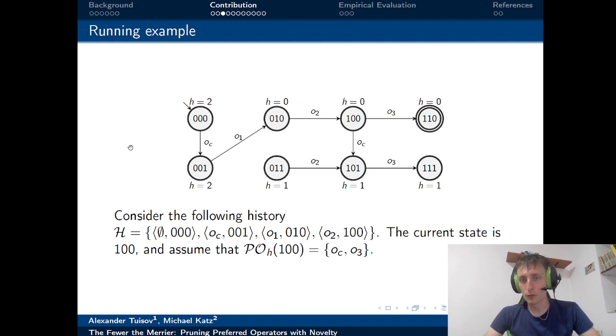Also, we have some operators here and the h equals to some number is the value of the underlying base heuristic which evaluates this exact state. For example, for state 000, the value of the underlying base heuristic is h equals 2.